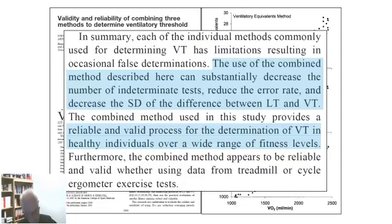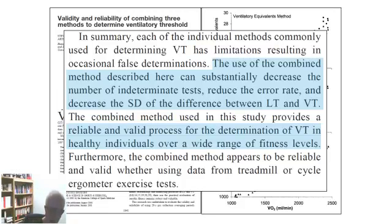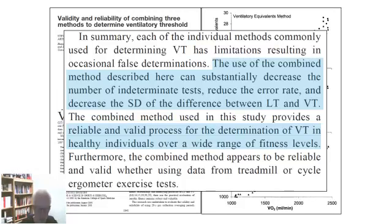That is fundamental. One of the issues in the literature is that many groups report that the VT and the lactate turn point don't align. But Gaskell's argument is that it may be because there are errors in the way ventilatory thresholds have been identified. Combine the methods, reduce the error, and you're more likely to get agreement. The combined method provides a reliable and valid process for determining ventilatory thresholds in healthy individuals across a wide range of fitness levels. The message is: ventilatory threshold from one method alone is perhaps not robust enough, but combine the methods and look for agreement, and you can identify the ventilatory threshold quite neatly.